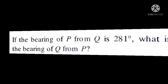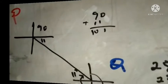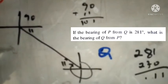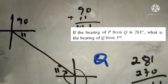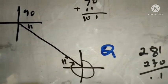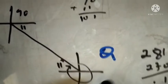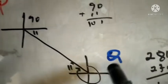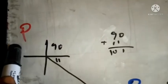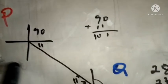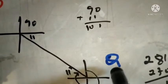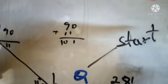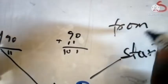Now let's look at this question. We are given that the bearing of P from Q is 281 degrees. So this talks about the bearing of P from Q. Understand that English carefully — it means you are moving from Q. So assume this is your house and you are moving from Q, which is your starting point. Pay close attention to the preposition 'from'.